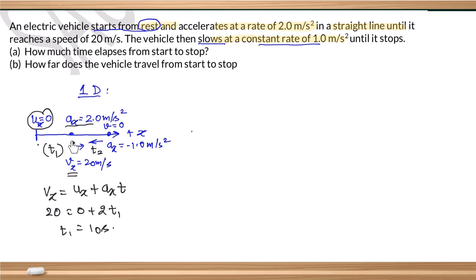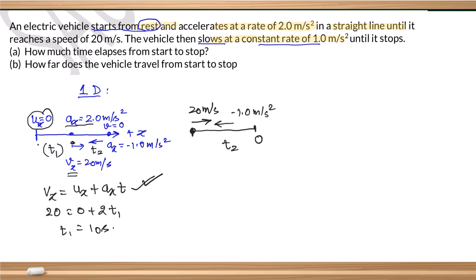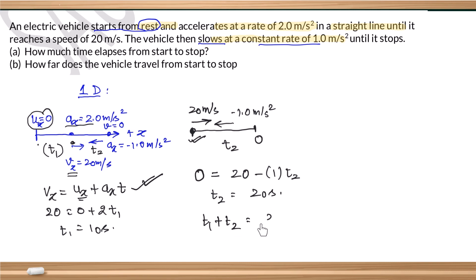Now for phase 2, the vehicle decelerates. The initial speed for this phase is 20 m/s, the acceleration is −1.0 m/s² (opposite direction), and final speed is 0. Using vx = ux + ax·t2: 0 = 20 + (−1.0)·t2, so t2 = 20 seconds. Total time elapsed is t1 + t2 = 10 + 20 = 30 seconds.